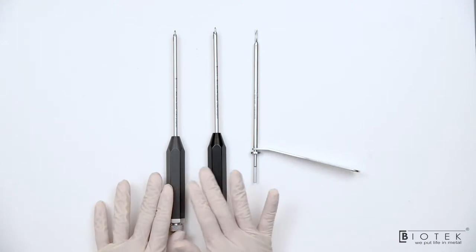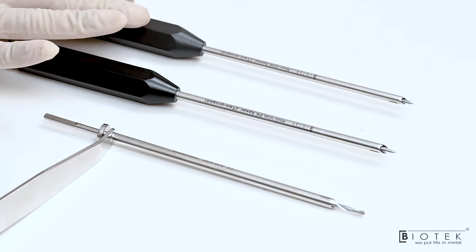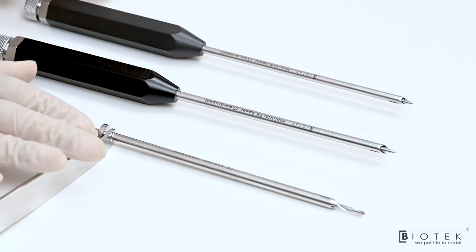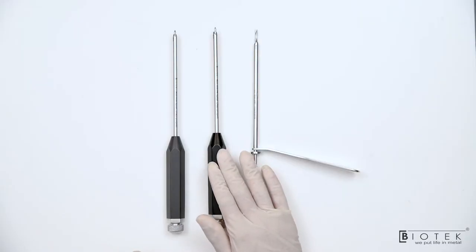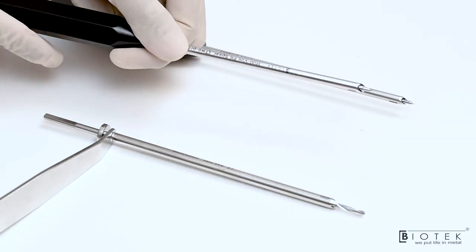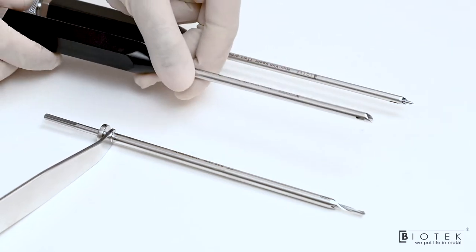These are spears for Bankart repair anchor insertion. This is for Mini-Revo, Mini-Revo PK and Mini-Revo PK knotless anchor. This is for 2.8 mm. This is 3 mm double-loaded suture anchor. This is 2 prong spear which is also available in fish mouth design.